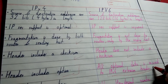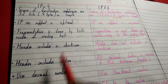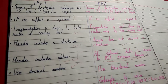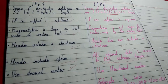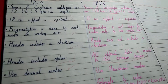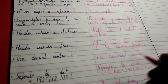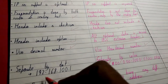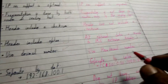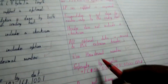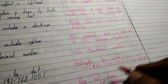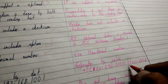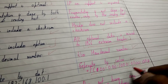IPv4 uses decimal numbers, which was fine when it was introduced, but now computers exist in very large numbers so IPv6 uses hexadecimal numbers. In IPv4, the address is separated by dots — for example, 192.168.100.1 — but in IPv6 it is separated by colons, for example FC00:0000:0000:0100:0100:0FCT.